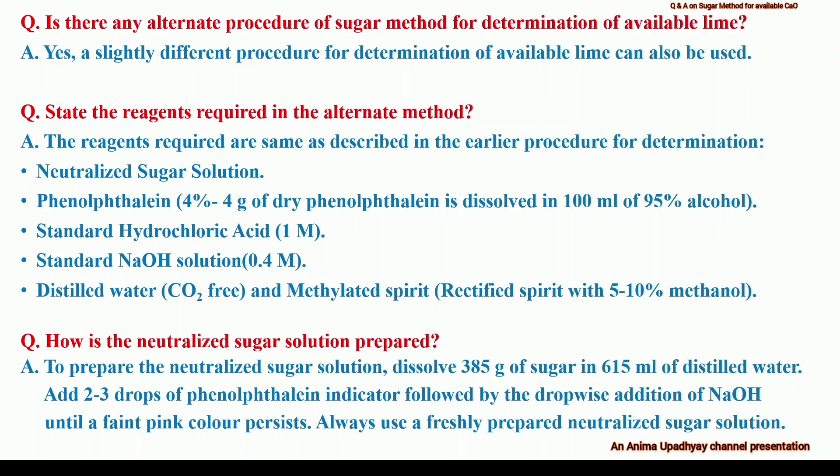How is the neutralized sugar solution prepared? To prepare the neutralized sugar solution, dissolve 385 grams of sugar in 615 ml of distilled water. Add 2–3 drops of phenolphthalein indicator followed by drop-wise addition of sodium hydroxide until a faint pink color appears and persists. Always use a freshly prepared neutralized sugar solution while doing this experiment.